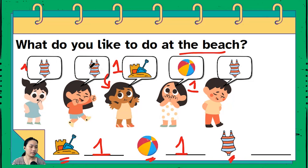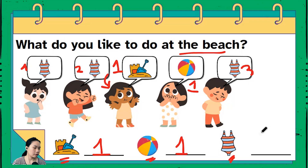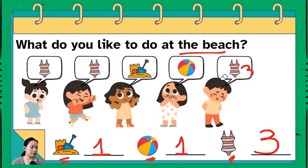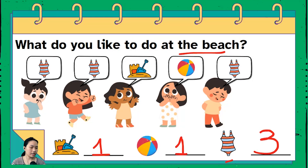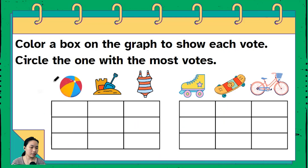As for swimming, let's start counting — one, two, three — there are three kids that would love to go swimming at the beach, so I'm gonna put number three here. Quick recount: three kids love swimming, one kid loves beach ball, and one kid loves the sand castle. Let's move on to the next part.